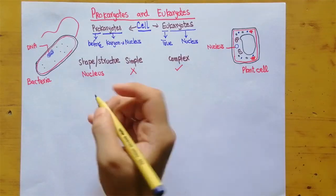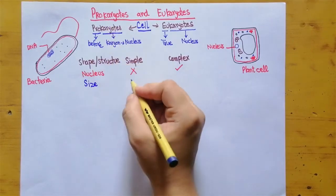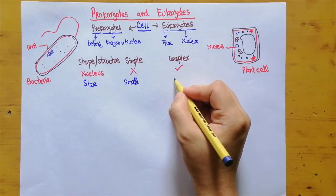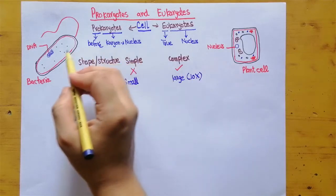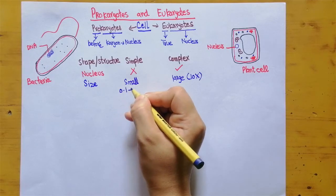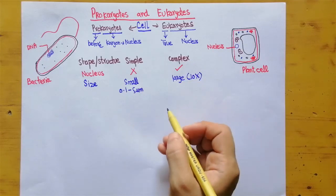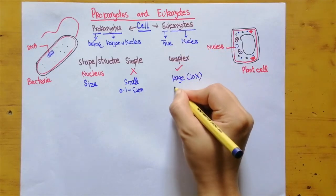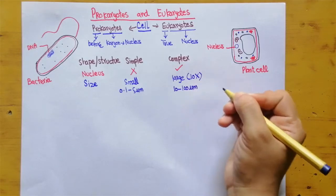Let's talk about size. The size of prokaryotes is very small, while eukaryotes are large — in fact, they are 10 times larger than prokaryotic cells. Prokaryotic cells are 0.1 to 5 micrometers in size, while eukaryotes such as plant cells are about 10 to 100 micrometers in size.